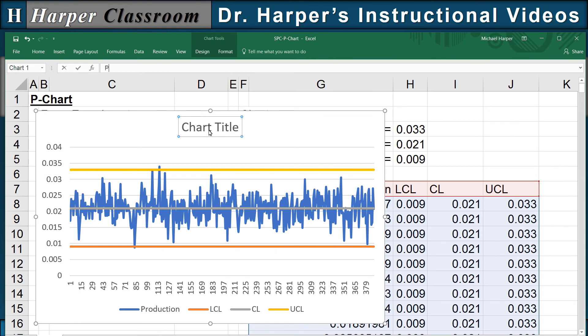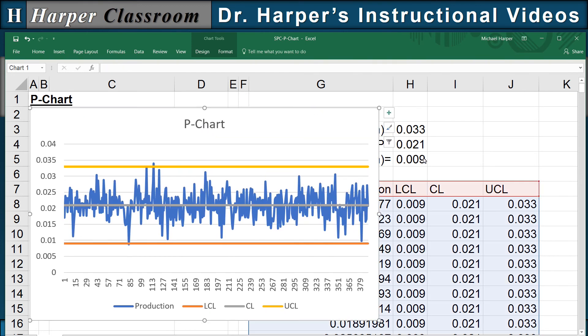And there's what our chart looks like. And to center the P chart, we can just say P chart. And we can see here that we have the lower control limit is .009, the center line is .021, the upper control limit is .033.